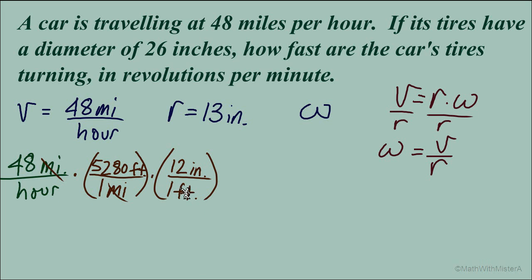and this 1 foot in the denominator will cancel our units of feet in the numerator there. And now we're looking at inches per hour, let's now change the hours into minutes. 1 hour in the numerator to cancel out the units of hour in the denominator here. And now we're left with units of inches per minute. And that matches with radius measured in inches and rotational velocity that will be in minutes.